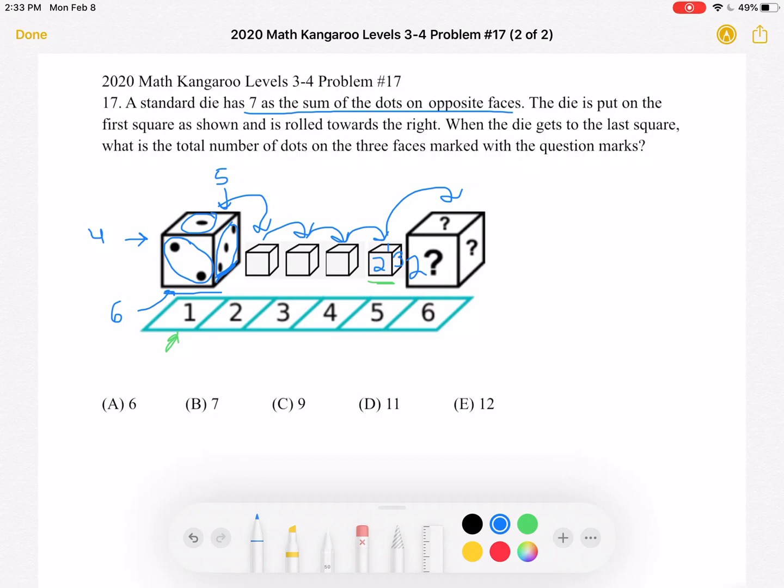So what happens when we rotate this in this direction? 1 will come down to this question mark over here on the right side. And then the 4 that was hidden is now going to go to the top when we roll it. So there must be a 4 in this position at the top.